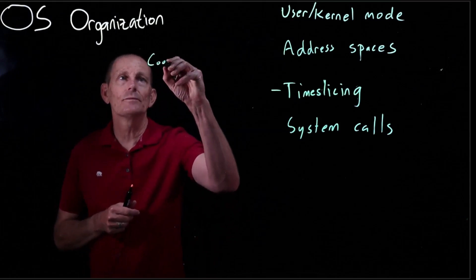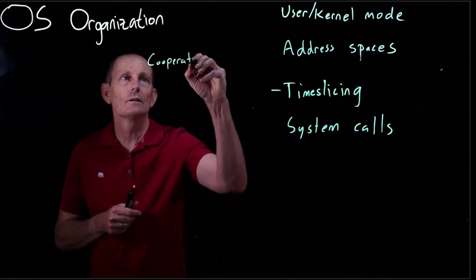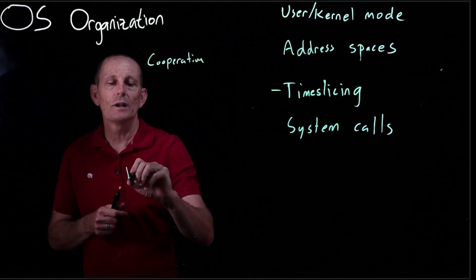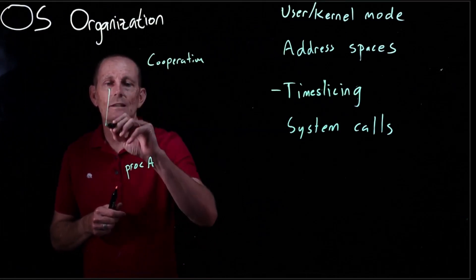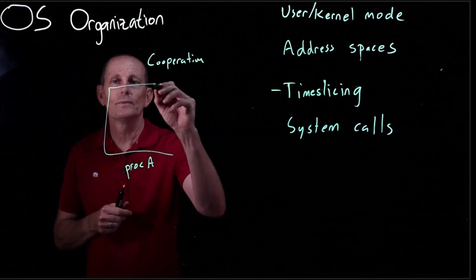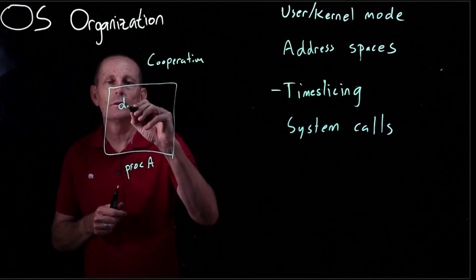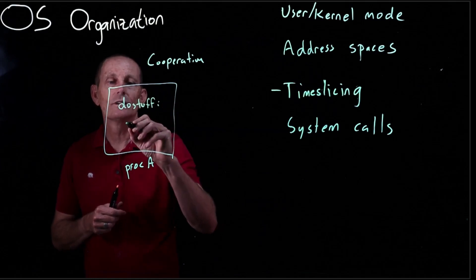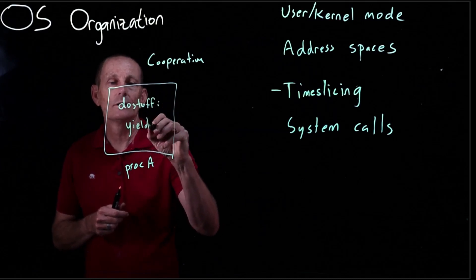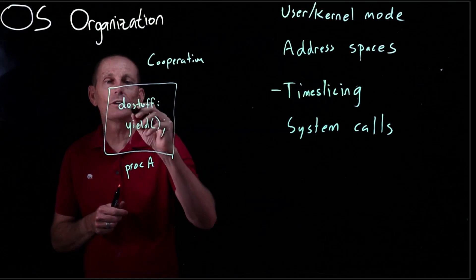One way to do that is cooperatively. So we have process A and it will have some code where it'll do stuff and then it'll call yield.